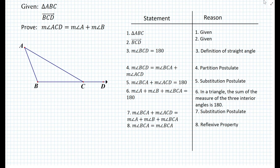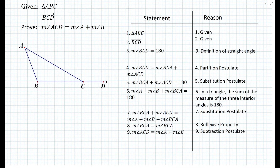So what we can do here is subtract the measure of angle BCA on both sides. In order to do so, we first need to write that the measure of angle BCA is equal to itself because of the reflexive property. That is an important step because according to the subtraction postulate, we want to subtract equal quantities. And once we subtract, we obtain that the measure of angle ACD is equal to the measure of angle A plus the measure of angle B. So we have now proven this theorem — that when you extend one of the sides of any triangle and create an exterior angle, that angle is always equal to the sum of the remote interior angles.